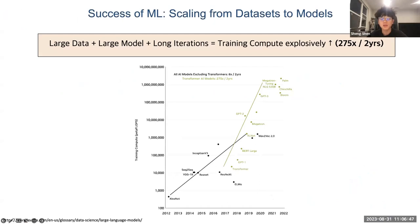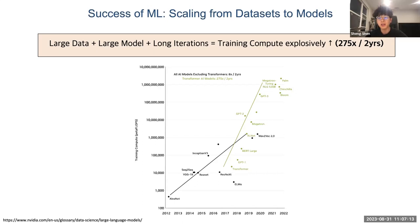As we all know, since the introduction of transformer models and pre-training, the combination of large datasets, extensive models, and prolonged iterations have led to a dramatic increase in training compute. It reached about 275 times over just two years, which is more than 30 times larger than the growth rate three years ago.